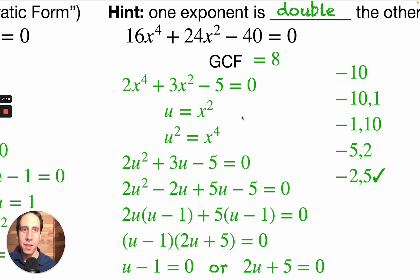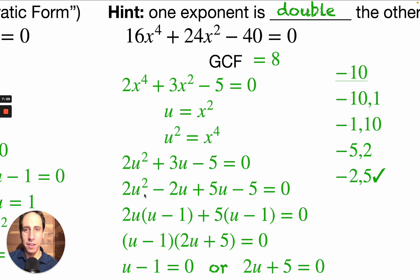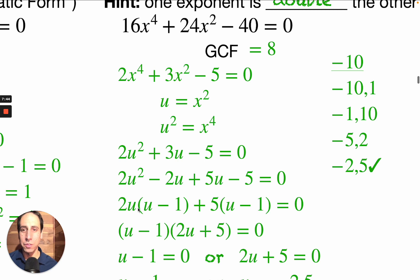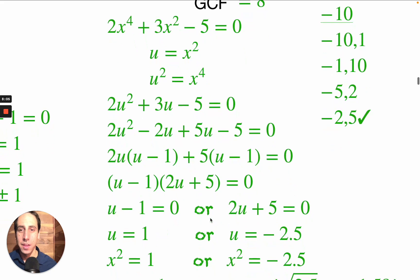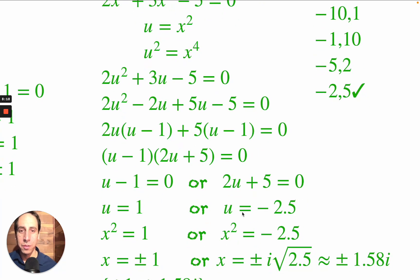I list out all factor pairs of negative 10 and choose the one that also adds up to positive 3, which is negative 2 and 5. So 3u turns into minus 2u plus 5u. Finding the GCF of the first two terms gives 2u times (u minus 1), and factoring 5 from the last two gives 5 times (u minus 1). Since u minus 1 appears twice, we get (u minus 1)(2u plus 5) equals 0. So u equals 1 or u equals negative 2.5.